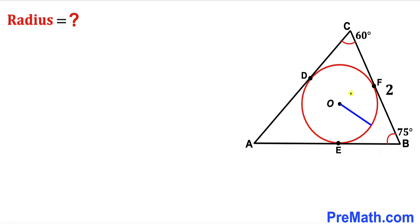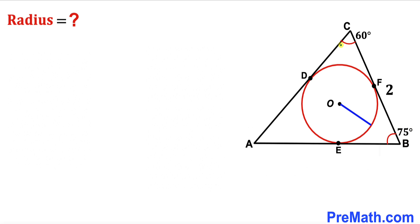In this video we have a circle with center O fully inscribed in a triangle ABC, such that side length BC is 2 units. Angle ABC is 75 degrees, whereas angle ACB is 60 degrees, and our task is to calculate the radius of this circle.